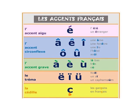Next one is la cédille. Under the letter C there is a hook — you can see it in the word garçon. You have already learnt about garçon — garçon means boy. The C with a cédille is pronounced as a soft S sound, like 'ss'. For example, garçon.